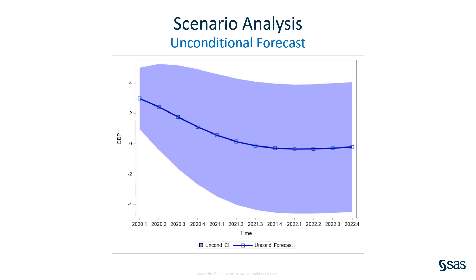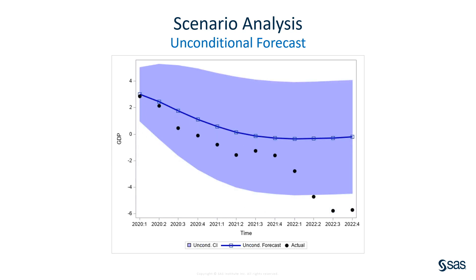Is this forecast good? Because the data are simulated, the actual values for the next three years are available. They are plotted on the graph as black dots. You can see that the unconditional forecast is not very good — the 95% confidence interval covers only 75% of the realized values. But without any additional information, that's the best you can do.